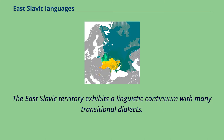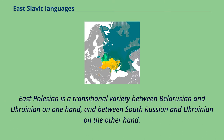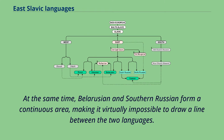The East Slavic territory exhibits a linguistic continuum with many transitional dialects. Between Belarusian and Ukrainian there is the Polesian dialect, which shares features from both languages. East Polesian is a transitional variety between Belarusian and Ukrainian on one hand, and between South Russian and Ukrainian on the other. At the same time, Belarusian and Southern Russian form a continuous area, making it virtually impossible to draw a line between the two languages.